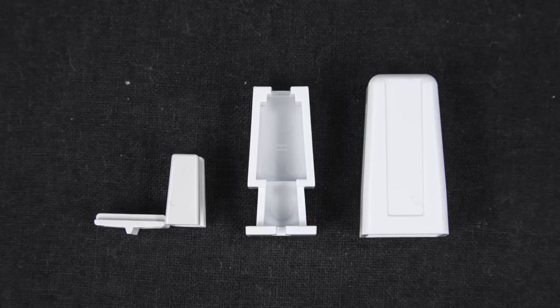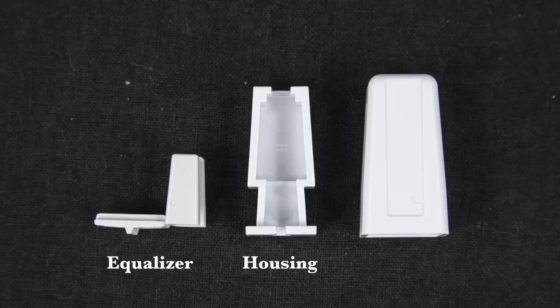This cord stop assembly, also called a cord condenser, comes in three parts: a two-part equalizer, an equalizer housing, and a housing cover.